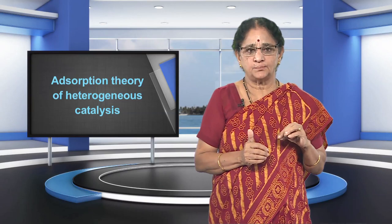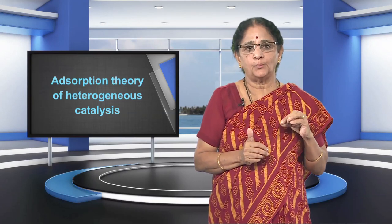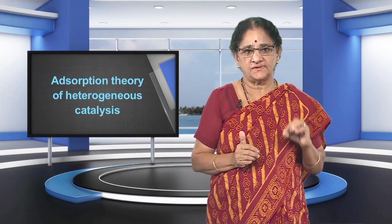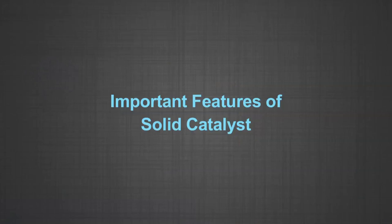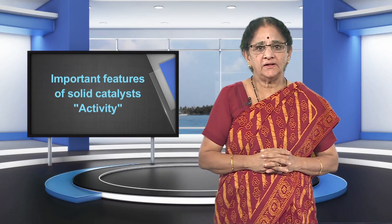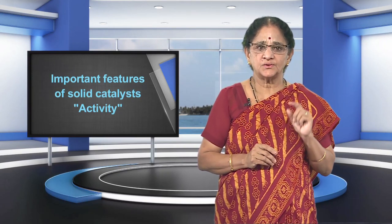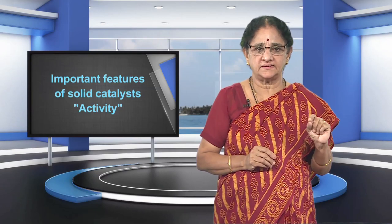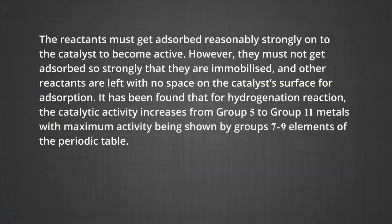However, this theory does not explain the action of catalytic promoters and catalytic poisons. Let us consider the important features of solid catalysts. The first and foremost feature is activity. The activity of a catalyst depends upon the strength of chemisorption to a large extent. The reactants must get adsorbed reasonably strongly onto the catalyst to become active. However, they must not get adsorbed so strongly that they are immobilized and other reactants are left with no space on the catalyst surface for adsorption.